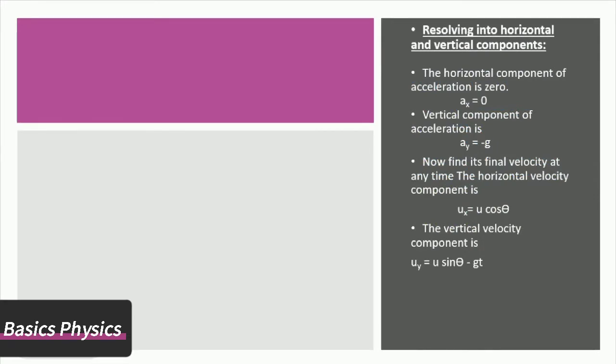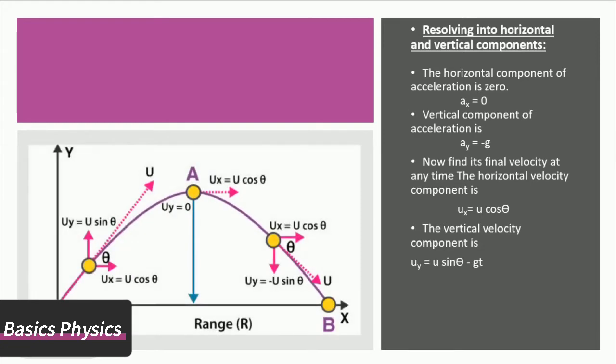The vertical component of velocity is minus g. The horizontal component of velocity at any time is Ux = U cos θ. The vertical velocity component is Uy = U sin θ - gt.